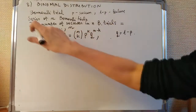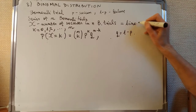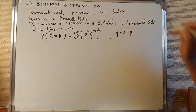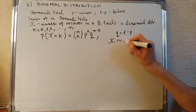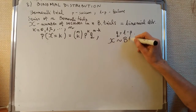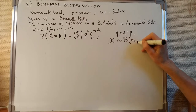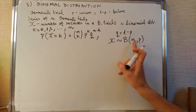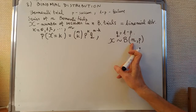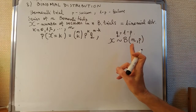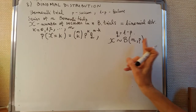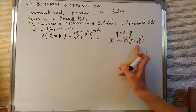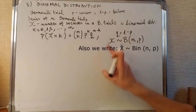So we have the binomial distribution. We say random variable X has binomial distribution with parameters n and p. It means we have a series of n Bernoulli trials — totally independent trials — where in each case the probability of success is p, and of failure is 1 minus p.